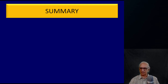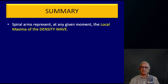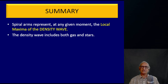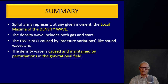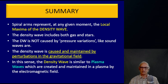Now let us summarize what we have said. The spiral arms represent, at any given moment, the local maxima of the density wave. The density wave includes both stars as well as gas clouds. The density wave is not caused by pressure variations like a sound wave — it is caused and maintained by spontaneously arising perturbations in the gravitational field. In this sense, the density wave in a galaxy is similar to plasma oscillations, which are created and maintained in a plasma by the electromagnetic field.